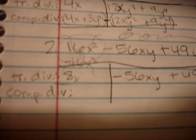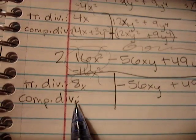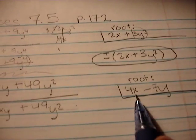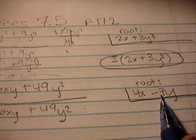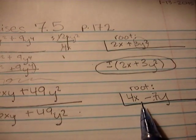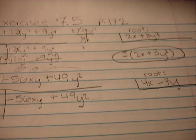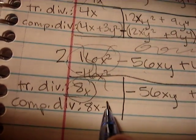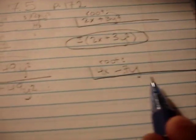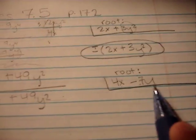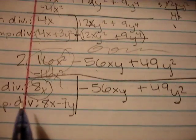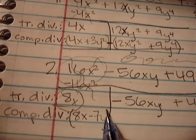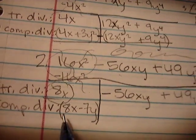Okay, next step is to find the complete divisor. So, you find the complete divisor by taking two times that root like we found there plus the latest bit that we found. So, it's going to be 8x, not 4x, but 8x minus 7y. 8x minus 7y. Now, you're going to take your negative 7y and multiply it by all of these terms in the complete divisor. So, let's just put a parenthesis around that.